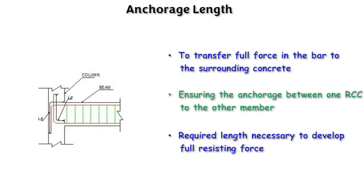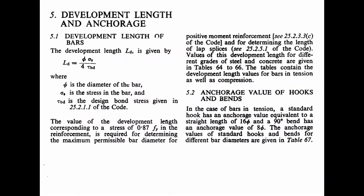Let's look into code SP16, which is the design aid for RCC structures. In SP16, the development length and anchorage length details are given. To calculate the development length we use the formula: Ld = φ × σs / (4 × τbd).